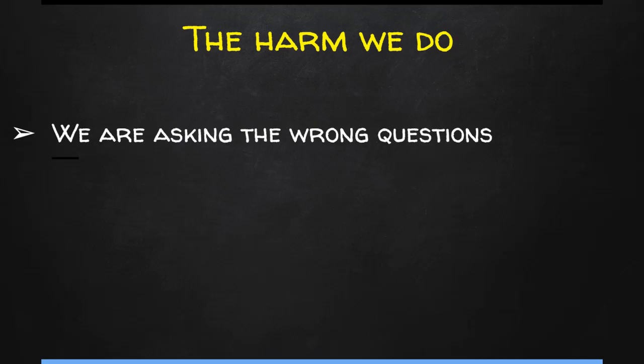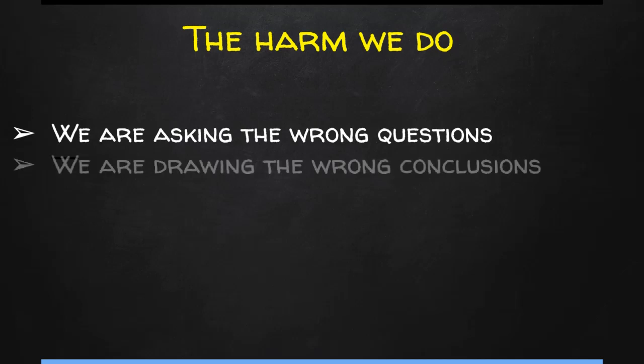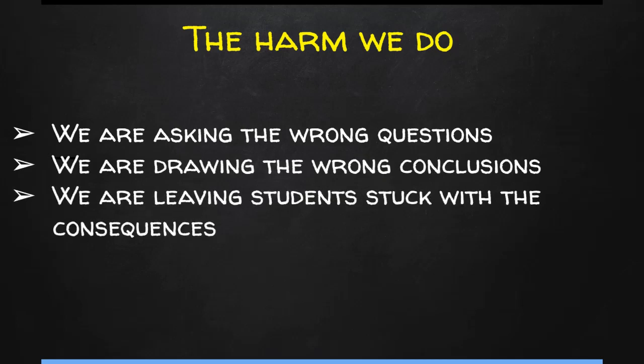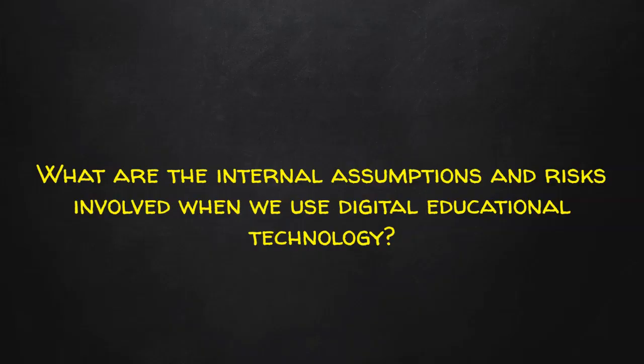At the core of this, I think we're asking the wrong questions of our educational technology, drawing the wrong conclusions, and leaving students stuck with those consequences. What are the internal assumptions and risks involved when we use digital educational technology? We're often aware of the immediate trade-offs, but we sometimes miss the associative fallacies that come with each tool. Take the LMS as an example: we often frame it as our virtual classroom. By doing so, it leads us to believe we should have full control of the space and students should be subject within it — and that's where risk arrives.